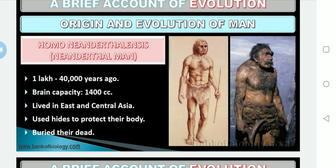The next primitive man is commonly known as Neanderthal man. These fossils were collected from the Neanderthal valley of Germany, which is why they were given that name. They had a brain size of 1400 cc and lived in eastern and central Asia between one lakh to forty thousand years back.